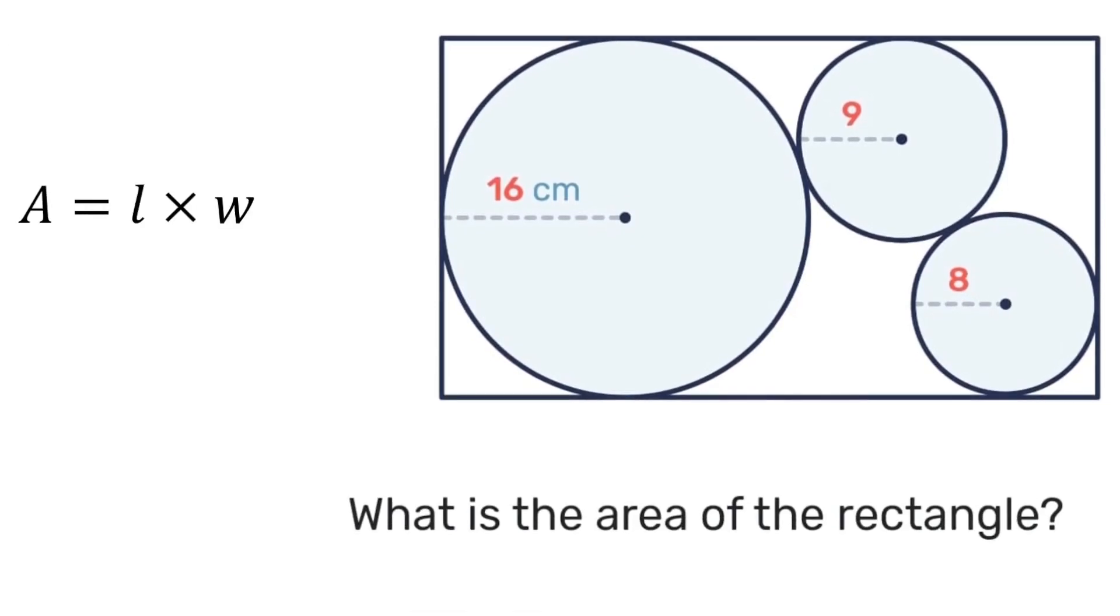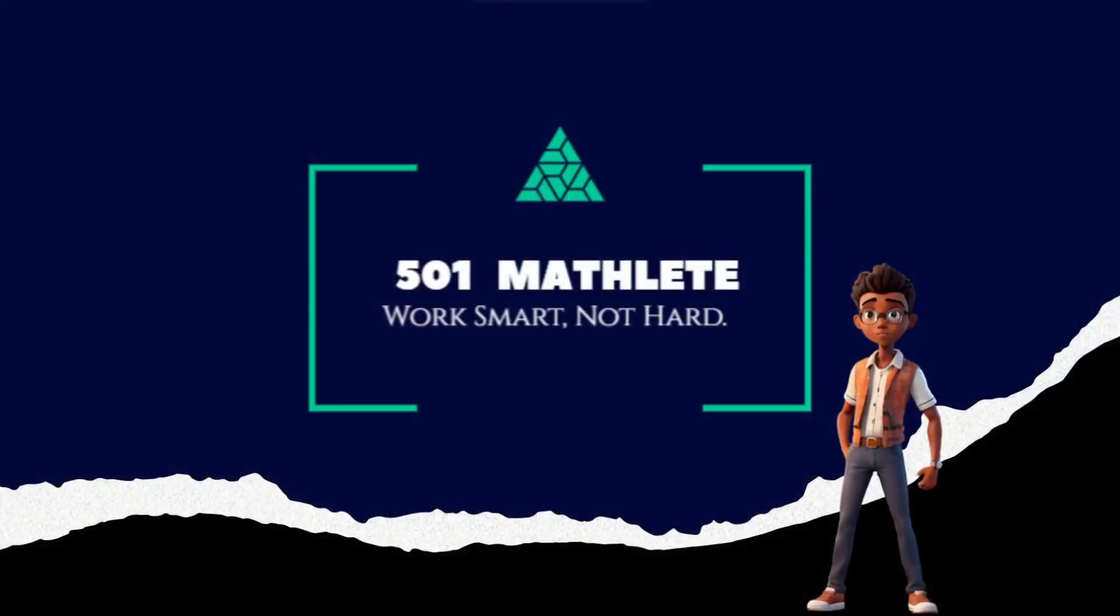Back to the original problem - what is the area of the rectangle? Well, we know area is length times width, and we just found the area to be 56 and previously the width was 32. So 56 times 32 gives you that the answer is 1792 square centimeters.